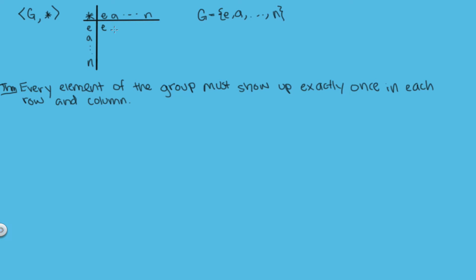So if we have an E here we can't have another E in this row or this column. Another way you might see this theorem written is that every binary operation table for a group is a Latin square, and a Latin square is just an n by n square like this where every element is used once and only once in each column and each row.